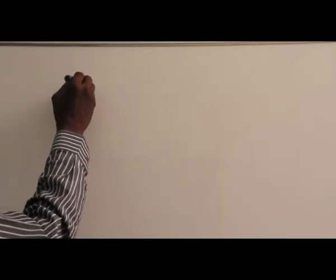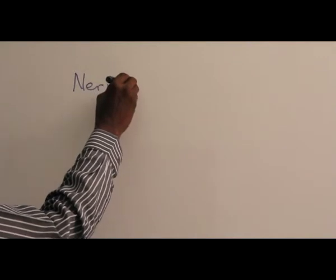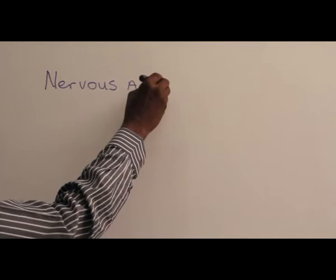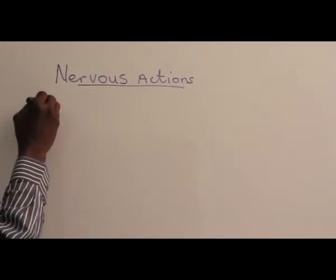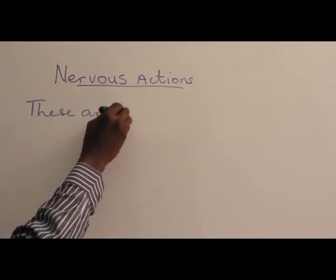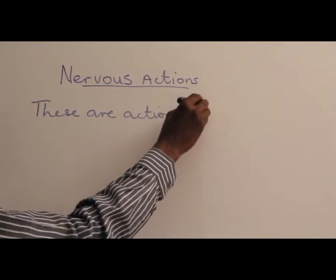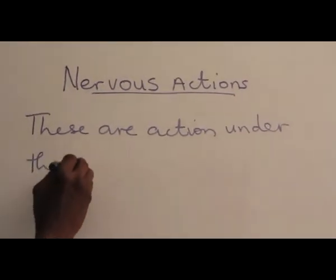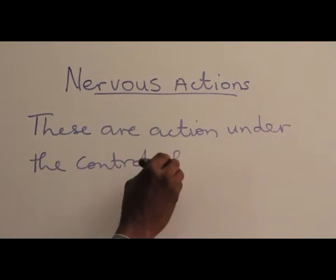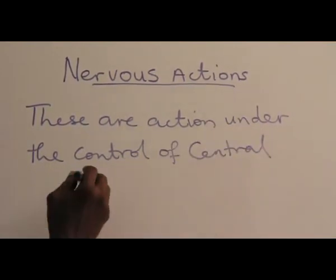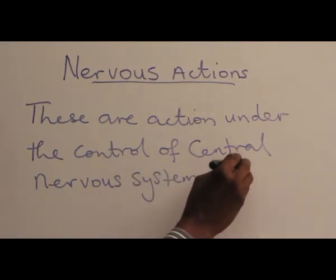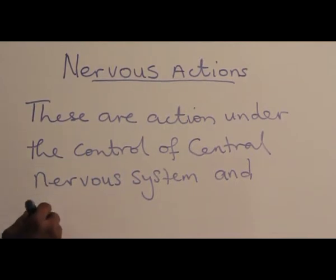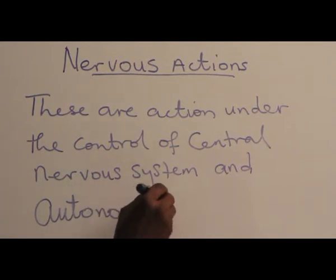The next area that we are looking into now is the Nervous System. These actions are under the control of the Central Nervous System and the Autonomic Nervous System.